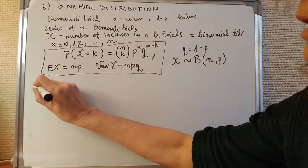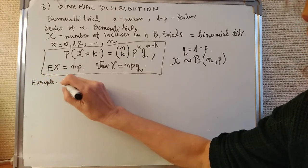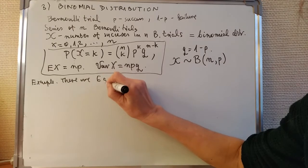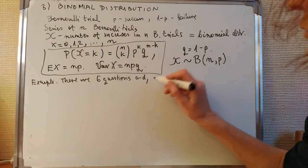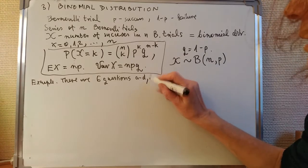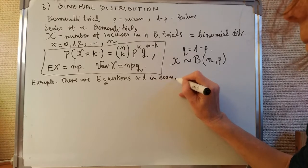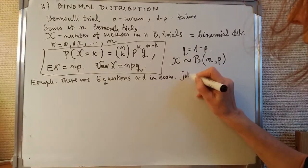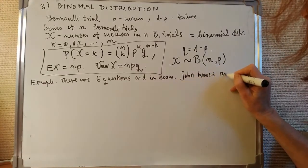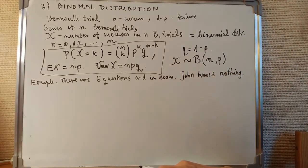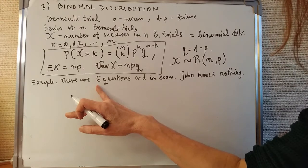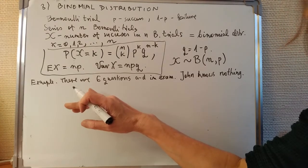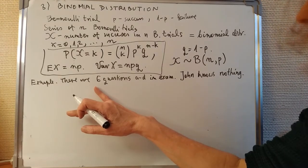Let's solve the following example. There are six questions in the exam, each with choices A to D — so four choices per question. It so happens that John knows nothing, but he wants to pass. In order to pass, you have to score over 50%, which means you must have at least four correct answers, since three correct is only 50% — not over 50%. So what are the chances John will pass?